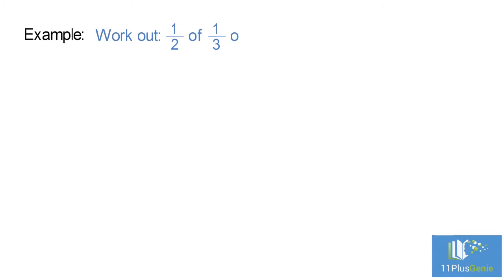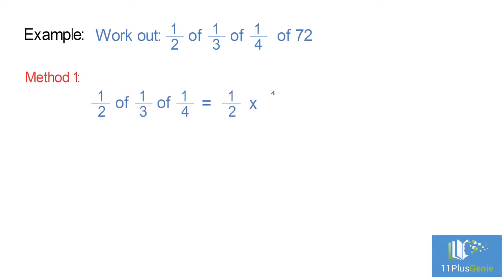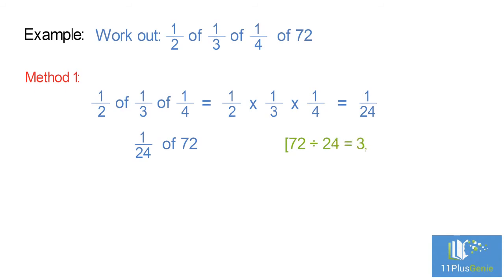Example four: work out a half of one-third of one-quarter of 72. Method one: a half of one-third of a quarter is the same as a half times a third times a quarter, which equals one twenty-fourth. Now find one twenty-fourth of 72: divide 72 by the denominator — 72 divided by 24 equals 3. Multiply by the numerator: 3 times 1 equals 3.